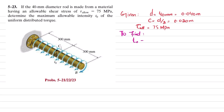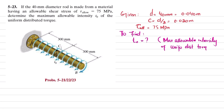What we have to find is t₀, the maximum allowable intensity of the uniformly distributed torque. Let's start with the solution.